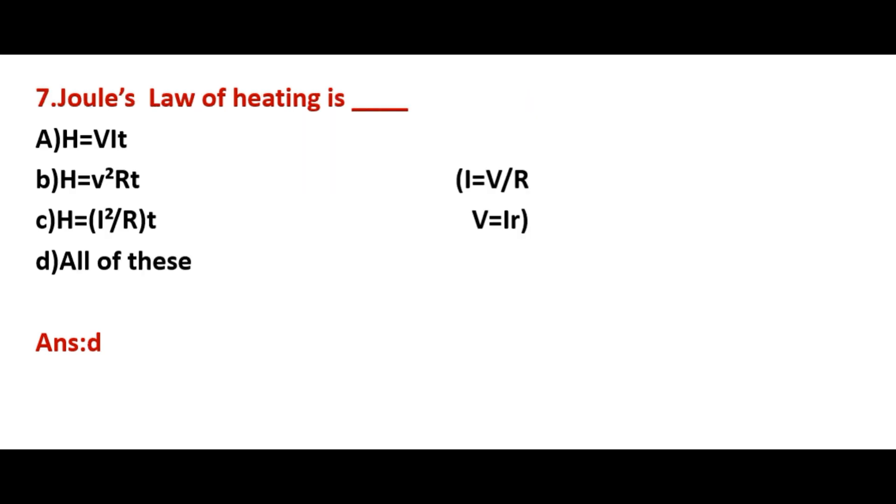Seventh one: Joule's law of heating is? Answer is D, all of these. Because the amount of heat energy produced for time T and current I is H equal to VIT. First you see the first equation H equal to VIT. And the second equation, we substitute I equal to V by R. That is Ohm's law.